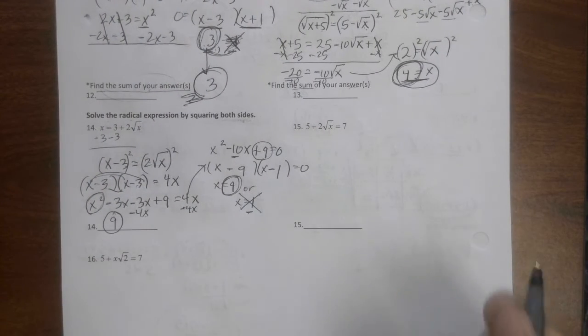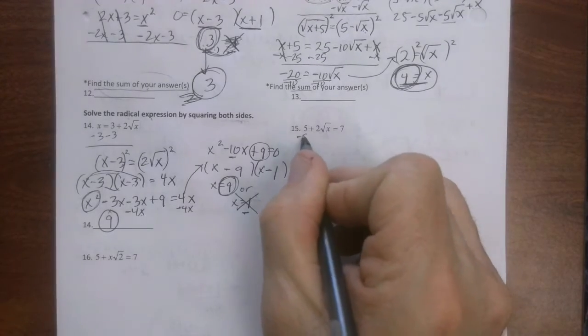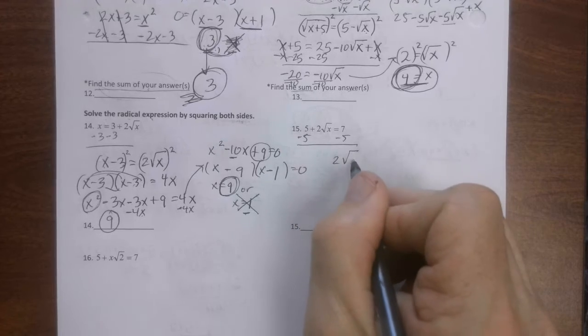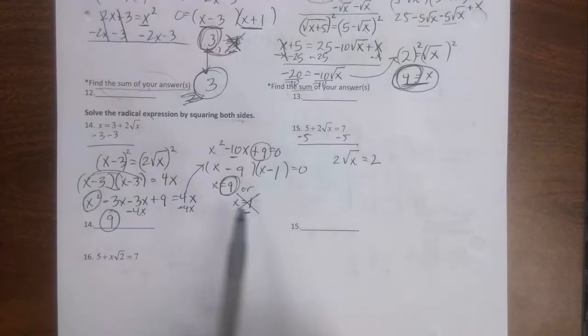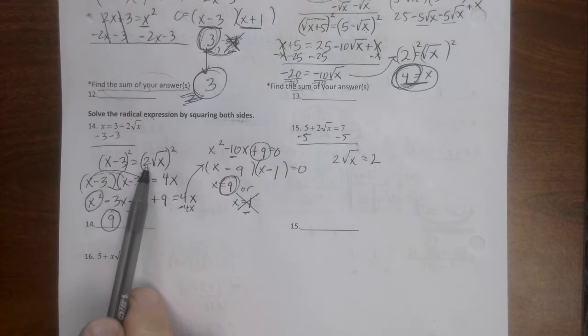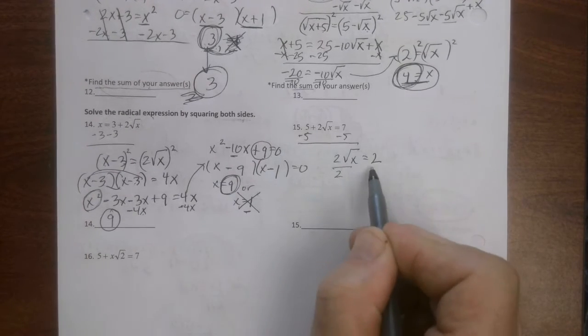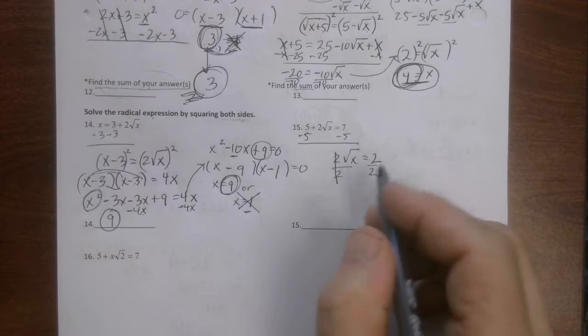This one over here, we're going to subtract five from both sides. Two square root of x equals two. Now on the last one I didn't divide by two because it would mess up this side. On this side I'm definitely going to divide by two because it's going to really clean things up.